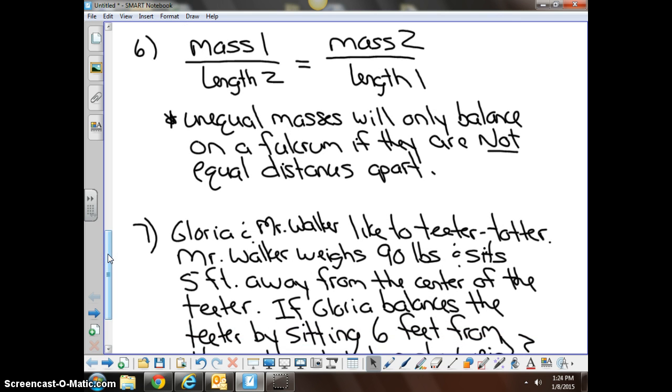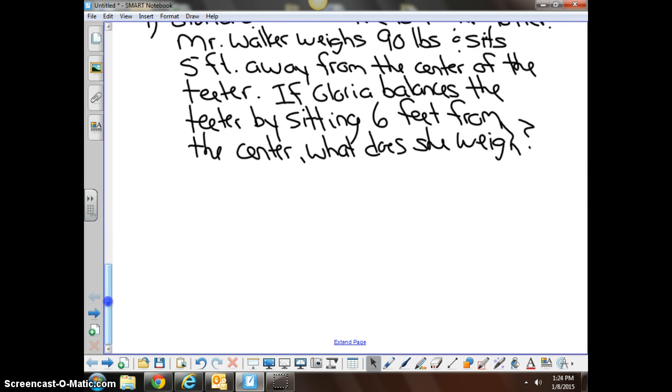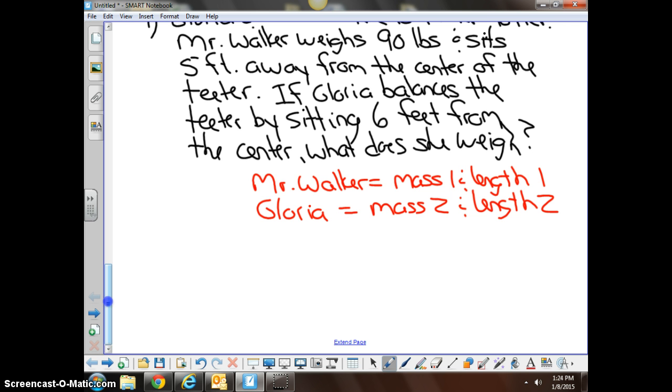With this information, we can figure out how much Gloria weighs by using the formula above. Mass one over length two equals mass two over length one. Now, very important that we understand what mass and what length go together. So I'm going to simply assign Mr. Walker is going to equal mass one and length one, and Gloria is going to equal mass two and length two. I would suggest possibly writing yourself a little note here to keep them separated, or to keep them straight.